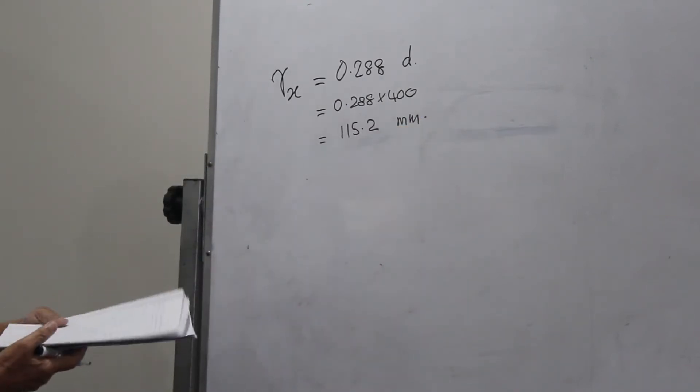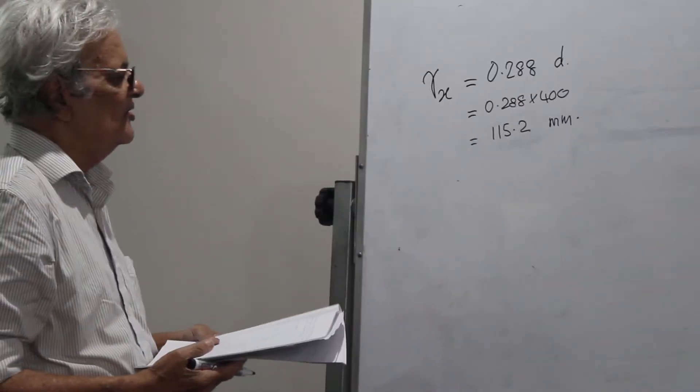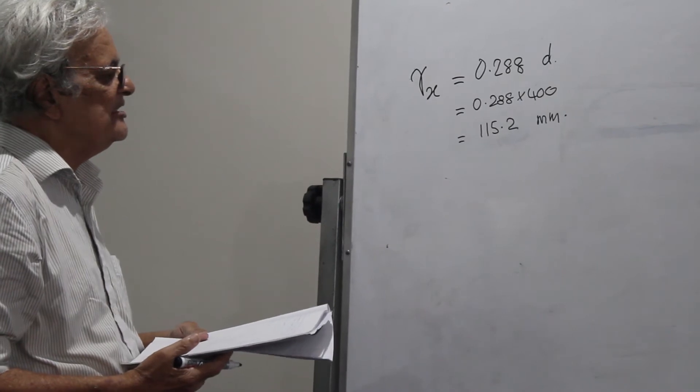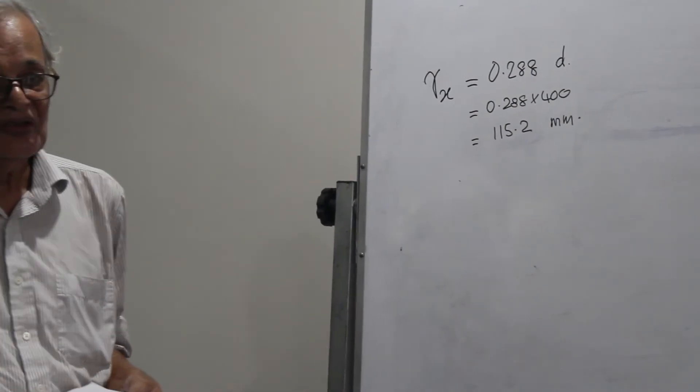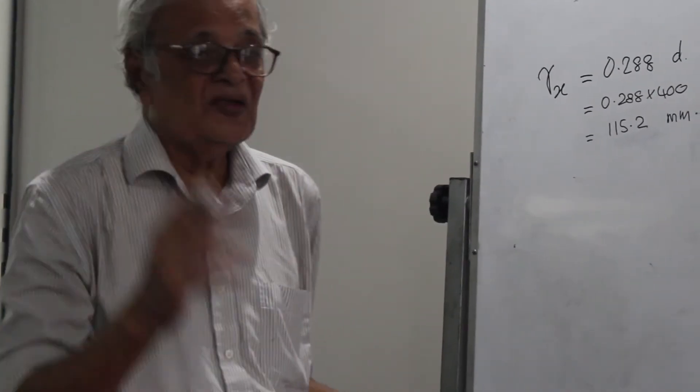Radius of gyration about the X-axis equals 0.288 D equals 115.2 millimeters.